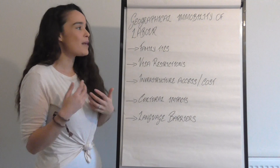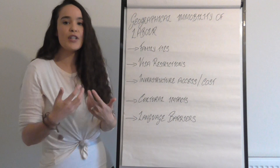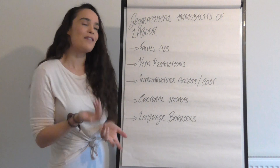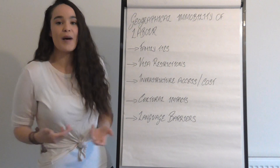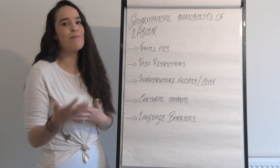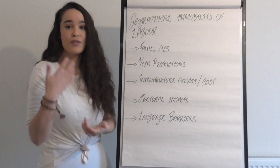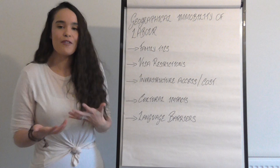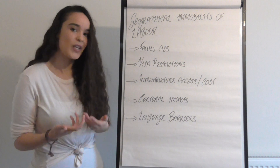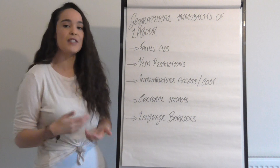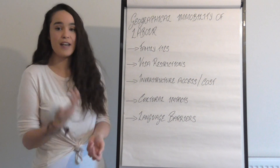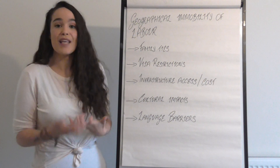The next cause is geographical immobility of labour — individual human capital units are unable to transfer to different industries because they're bound by their geographical location. For example, the perfect job might come up in Scotland, but if you live in London you can't transfer to it. One major reason is family ties: as social human beings, many individuals are unwilling or unable to move away from family, which acts as a barrier to entry to certain industries.